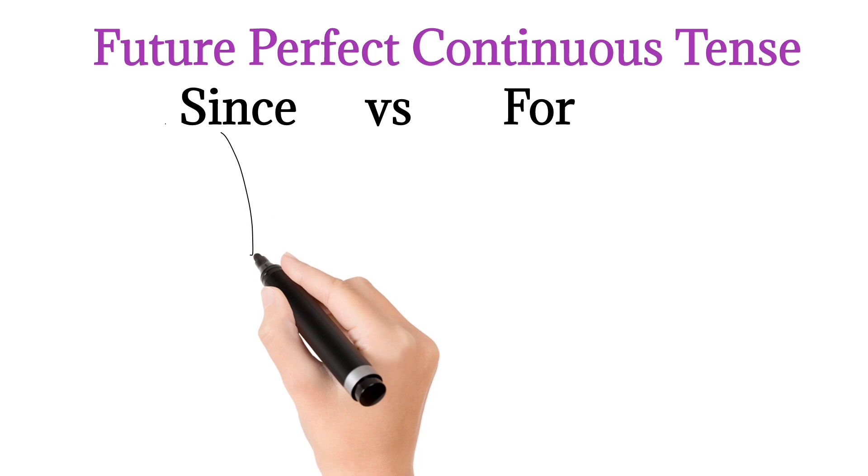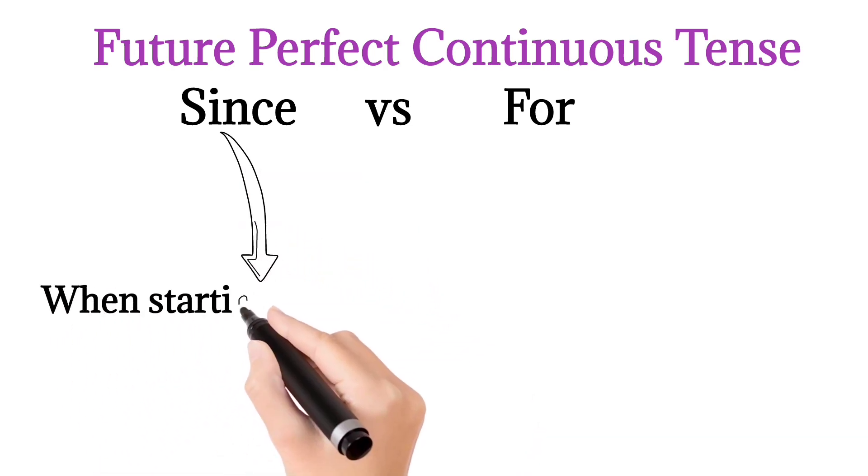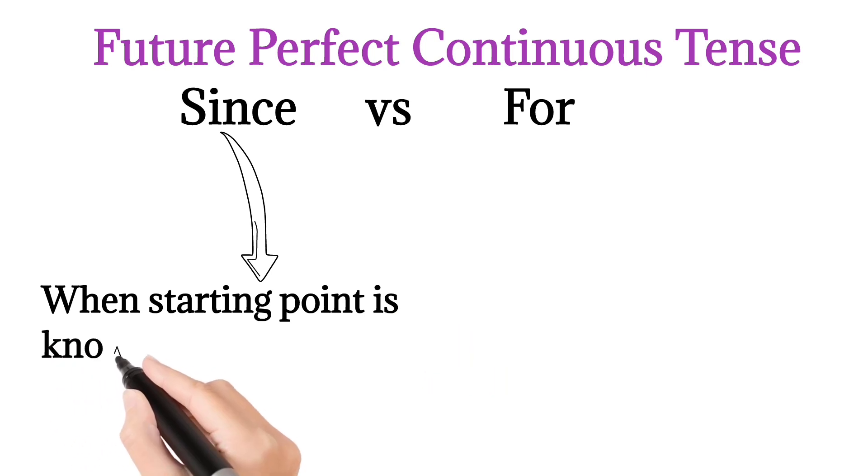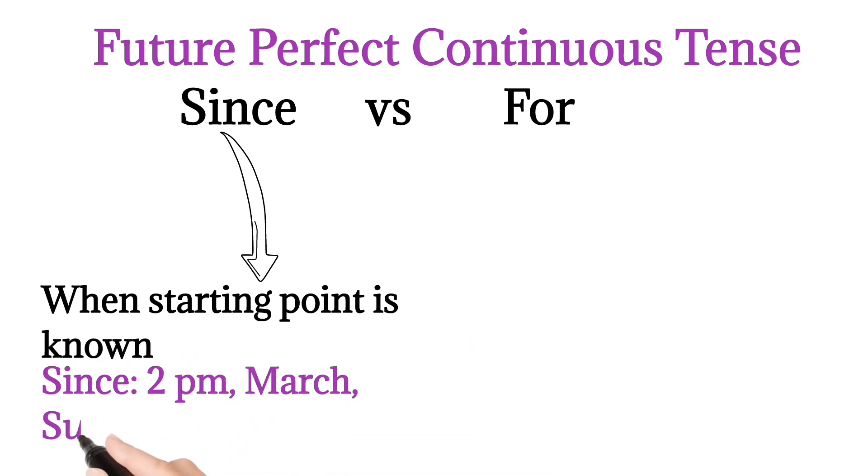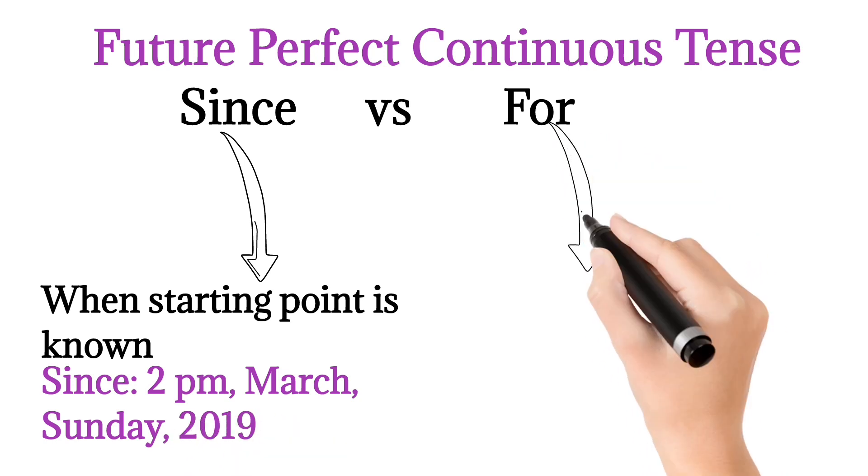Uses of Since versus For: We will use Since before that time, when the starting point is known. For example, since 2 p.m., March, since Sunday, since 2019.